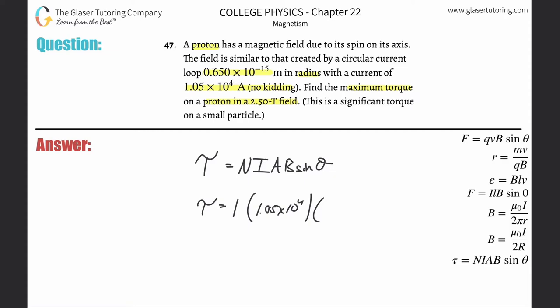The area - it's circular. They gave us the radius. The area of a circle is πr², so 0.65 × 10^-15. Make sure you square that, and then multiply it by the magnetic field strength, which was 2.5 Tesla.